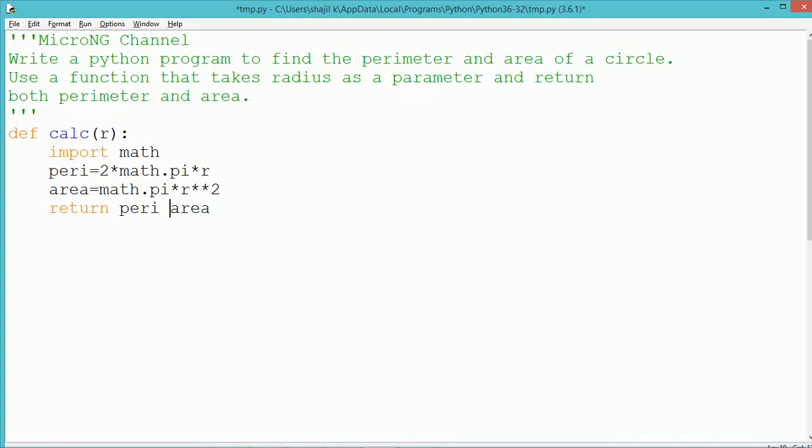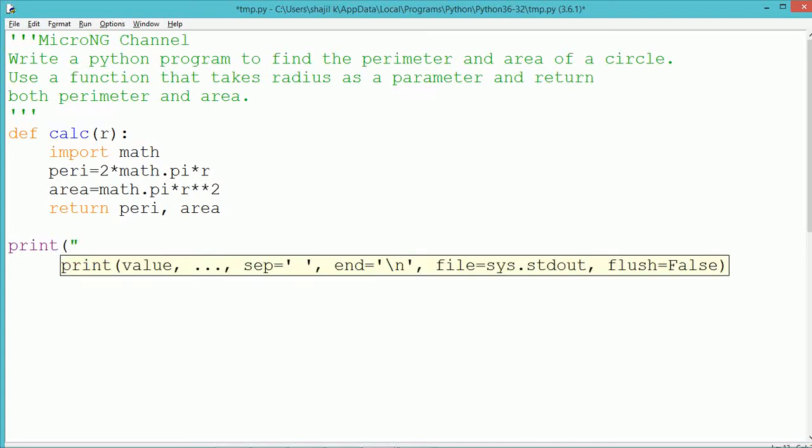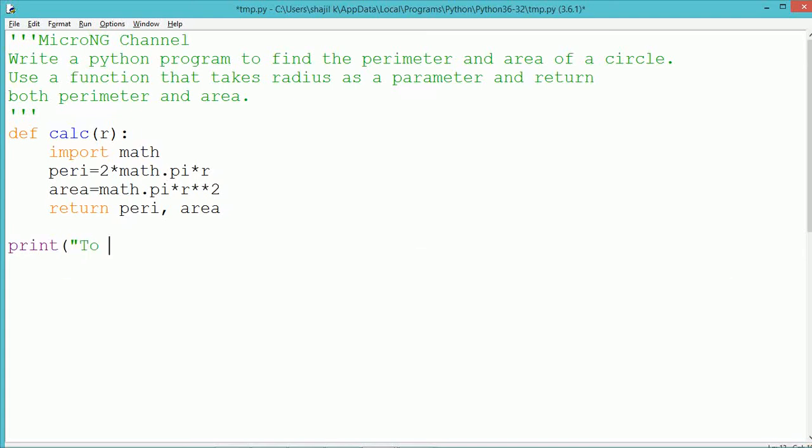Both values, perimeter and area, will be returned from the function. In Python, multiple values can be returned by using a single return statement. The values to be returned can be mentioned one after another using the comma operator. So in this function calc, two values are returned using a single return statement.